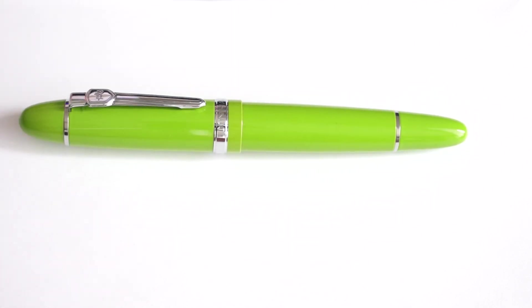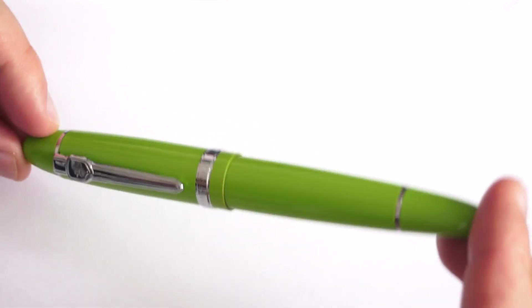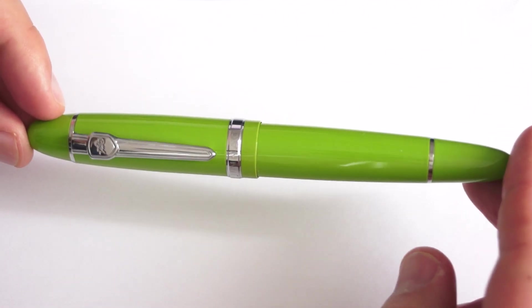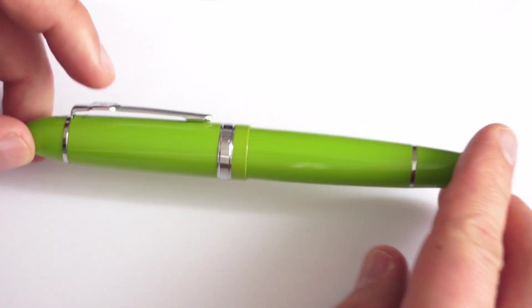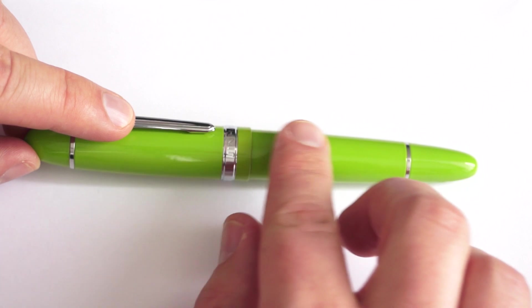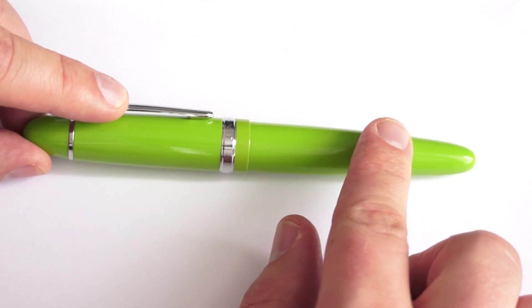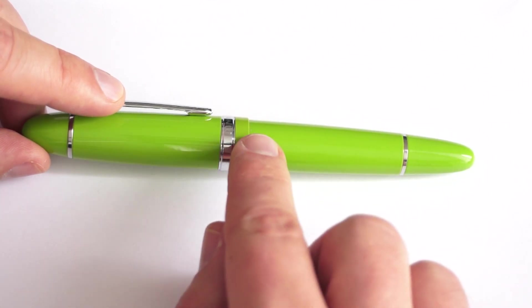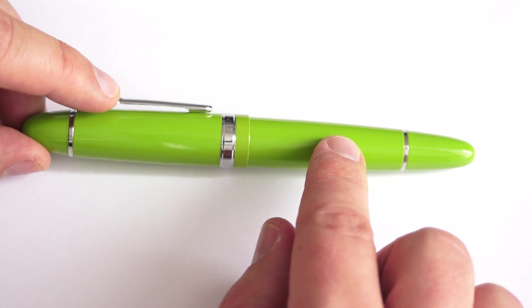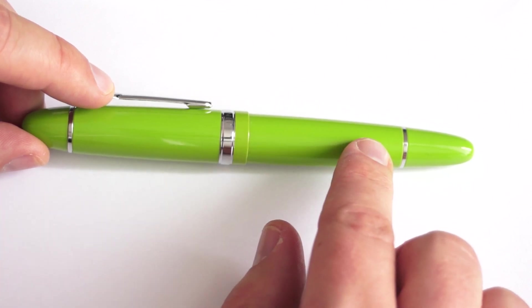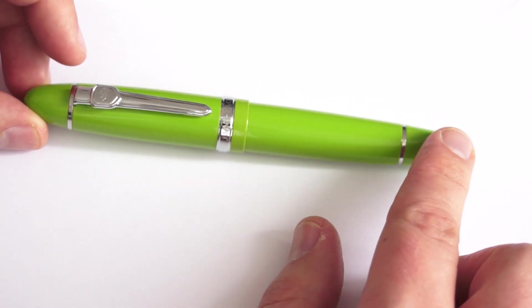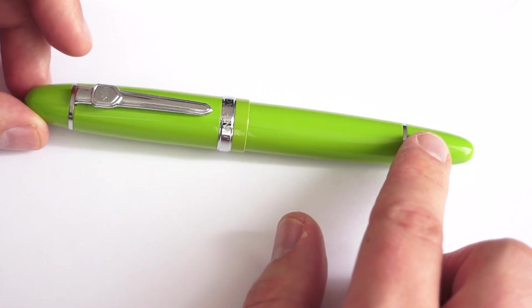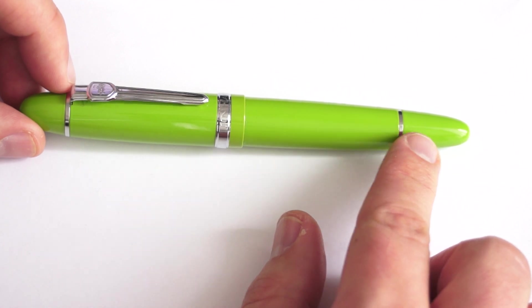The pens from Jinhao, the 159 model, is quite heavy in the hand. It's full metal body and it has a matte finish, and it's quite nice I must say from the way it looks.